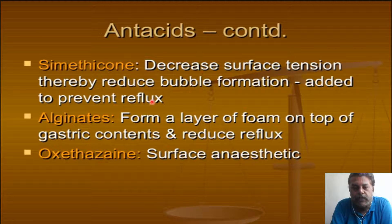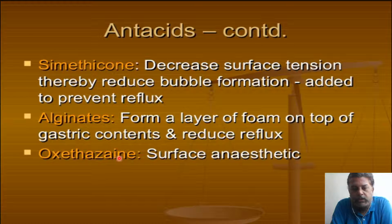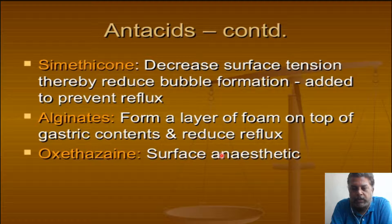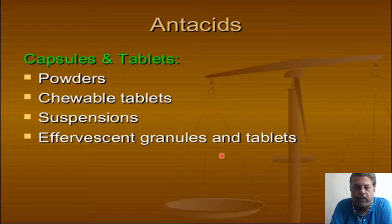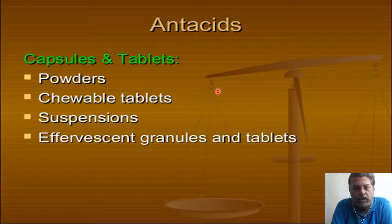Antacids decrease surface tension, thereby reducing bubble formation, which has the added advantage of preventing reflux esophagitis and GERD. Alginates form a layer of foam on top of gastric contents and reduce reflux. Oxethazaine acts as a surface anesthetic for gastric purposes and can be available in tablet, powder, chewable tablets, effervescence, or syrups.